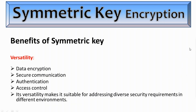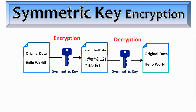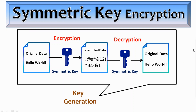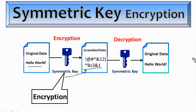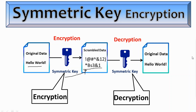Let's now understand how symmetric key encryption works. As we can see on the screen, the first step is to generate a key. This key is a random string of bits, typically of a fixed length, that serves as a secret key for encrypting and decrypting messages. The second step is encryption — the sender takes the plain text, which is the original unencrypted message, and combines it with the symmetric key using a symmetric encryption algorithm. This process generates ciphertext, which is the encrypted form of the plain text message. Once the data is encrypted, it can be sent to the destination or remote peer as required.